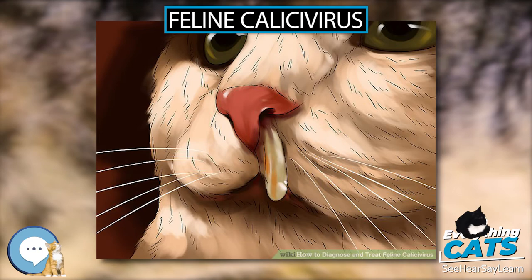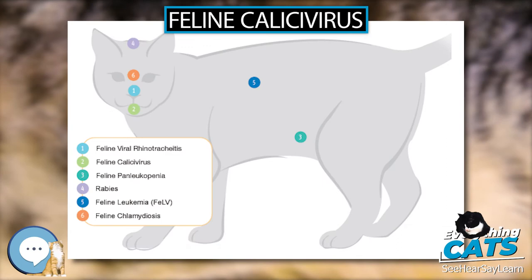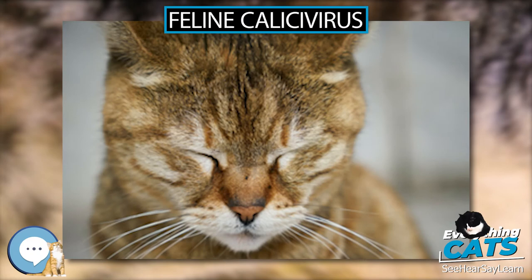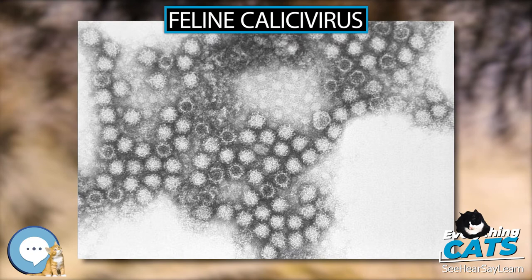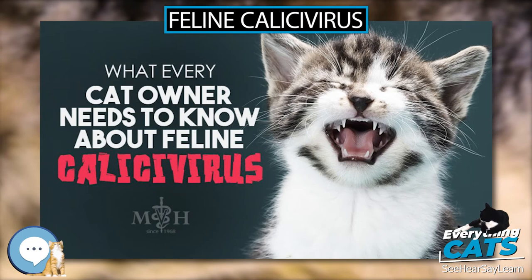Pneumonia may develop with secondary bacterial infections. In addition to stomatitis, some cats may develop a polyarthritis, both probably immune-mediated through immune-complex deposition. Stomatitis and polyarthritis can develop without any upper respiratory infection signs, but fever and loss of appetite may occur. Less commonly, glomerulonephritis can develop in chronic cases secondary to immune-complex deposition. The great variability of clinical signs in individual cases of FCV is related to the relative virulence of different strains of the virus.